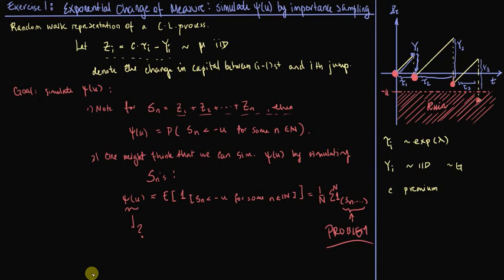So how do we then simulate the ruin probability? Well, that is what we will address in this exercise, because what we will do is instead of simulating these S_N's, we will simulate something slightly different which we can relate to this expression, where that slightly different thing that we simulate will be sufficiently nice, so that it is actually possible to simulate it using finitely many simulations.